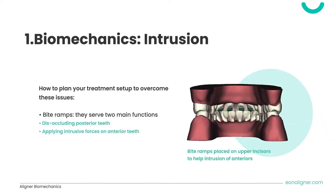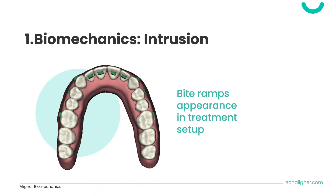To overcome these problems, consider the following two points. Bite ramps, as shown in the figure, are an aligner feature on its palatal surface, serving the same purpose as in traditional braces. They are placed on the upper incisors and/or canines and serve two main functions: disoccluding posterior teeth to unlock the bite and remove any bite interferences, and also providing room for passive extrusion through over-eruption. Additionally, they apply intrusive forces on anterior teeth. Bite ramps appear in the 3D treatment simulation viewed from the top of the arch.